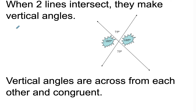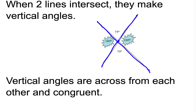When two lines intersect, they make vertical angles. Vertical angles are across from each other and congruent. These angles are made of the same two lines — here's one line, here's the second line — they intersect and have a common point in the middle. So the 105s are vertical and the 75s are vertical. Vertical angles are always congruent, meaning they have the same number of degrees.